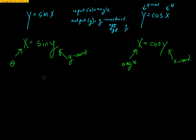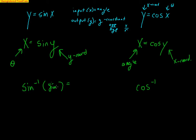So the output is the angle and the input is the y-coordinate from the unit circle. For cosine, we'd have x equals cosine of y, where the output is the angle and the input is the x-coordinate from the unit circle. We have to change the notation to make it clear it's an inverse and not regular sine. We use sine with a little negative 1 — that's sine inverse. Or cosine with a negative 1 — cosine inverse. Sine inverse takes in the y-coordinate and gives out the angle theta.